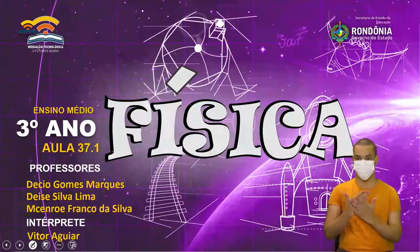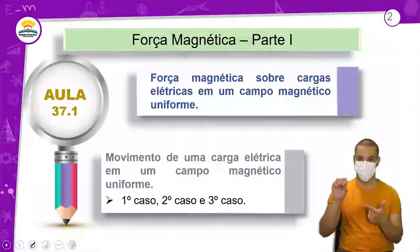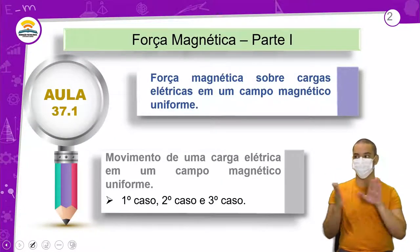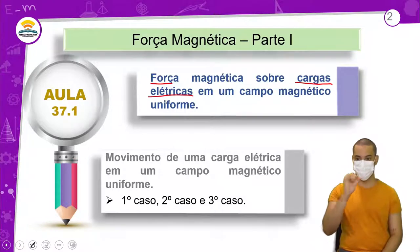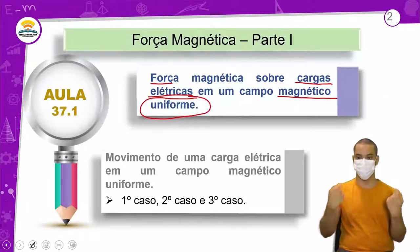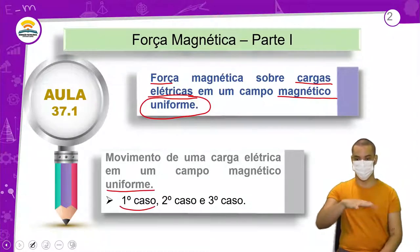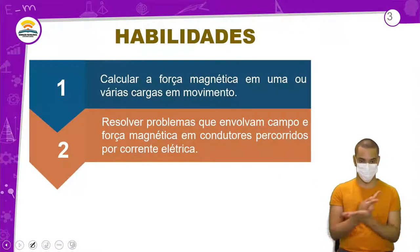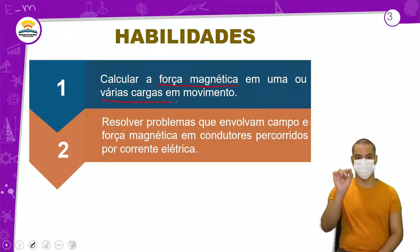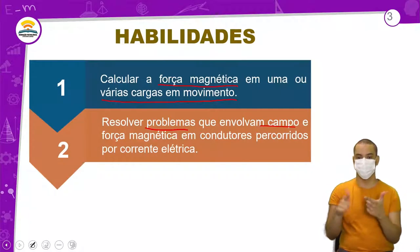Aula 37, com o professor Décio. Força magnética, parte 1 — vai ter uma segunda parte também. Força magnética sobre cargas elétricas em um campo magnético, que tem que ser uniforme. Movimento de uma carga elétrica em um campo magnético uniforme: primeiro caso, segundo caso e terceiro caso. Habilidades: calcular a força magnética em uma ou várias cargas em movimento.